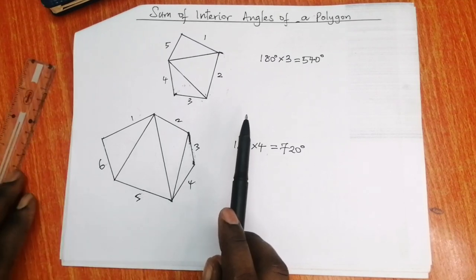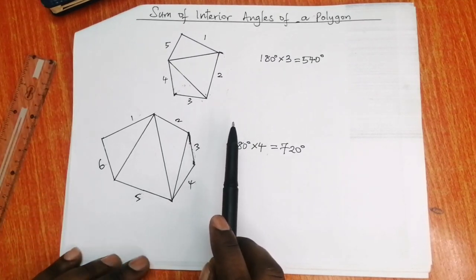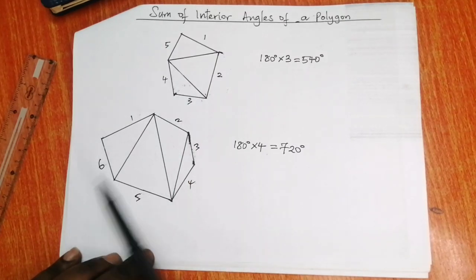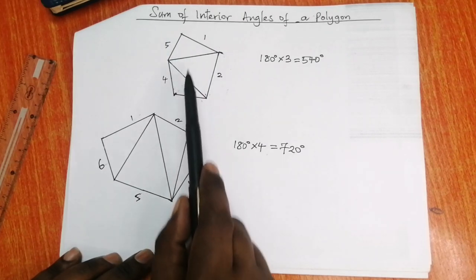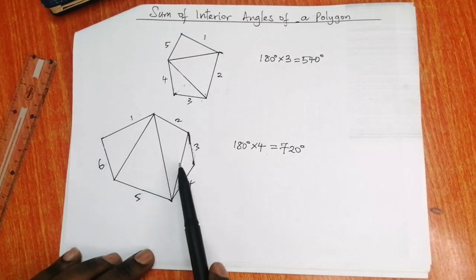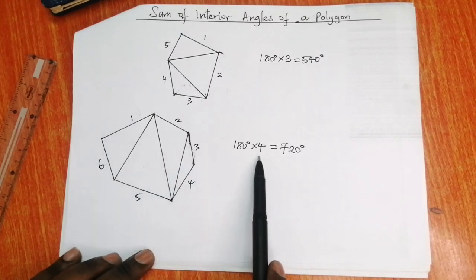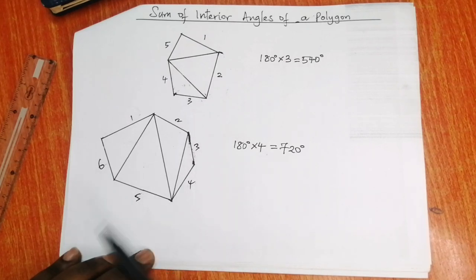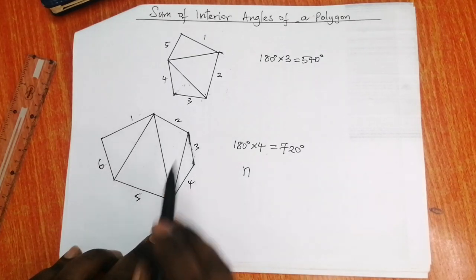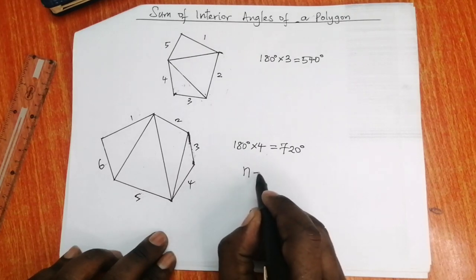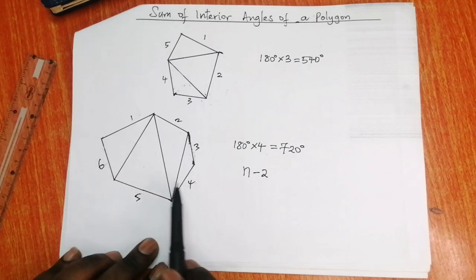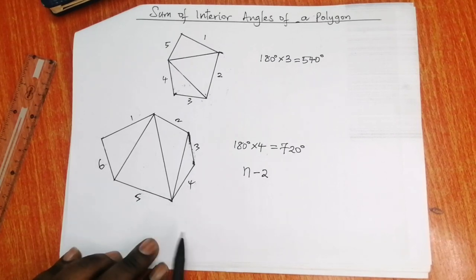Please make some observations here: the number of sides of the polygon and the number of triangles it is divided into have a relationship. For the two polygons we have taken, we have five sides and three triangles — a difference of two. For the six-sided polygon we have four triangles — also a difference of two. That means if n is the number of sides of the polygon, n minus two gives you the number of triangles.